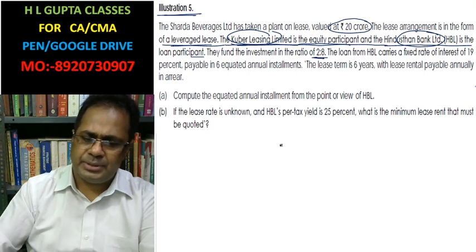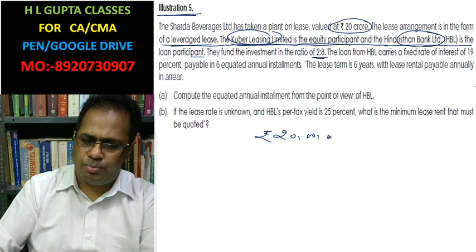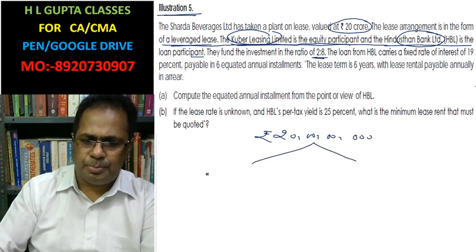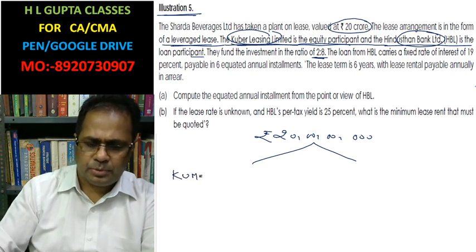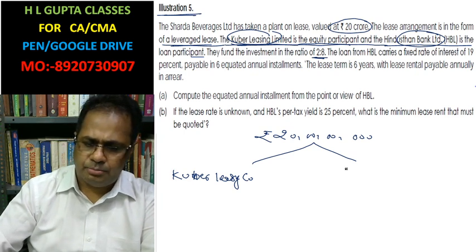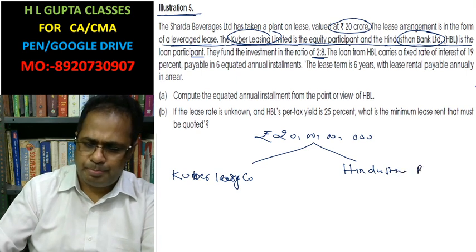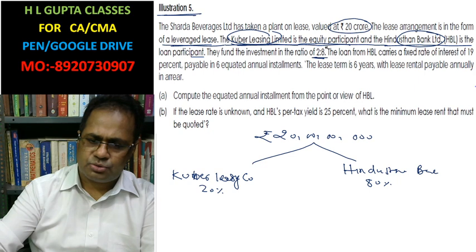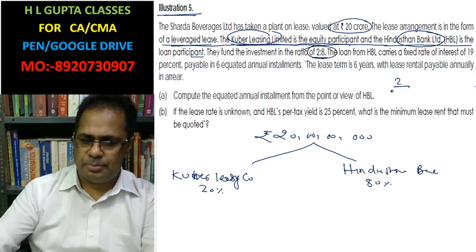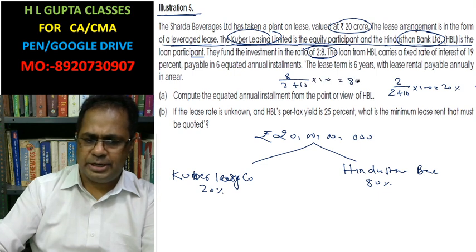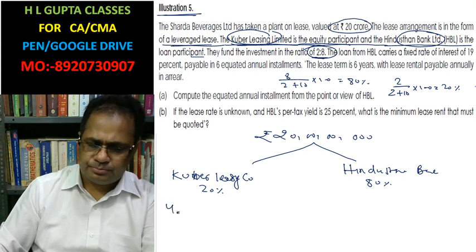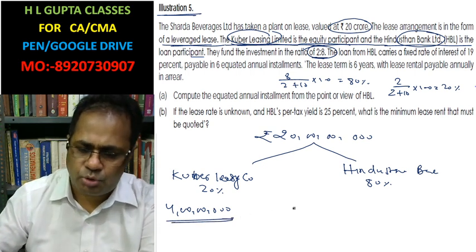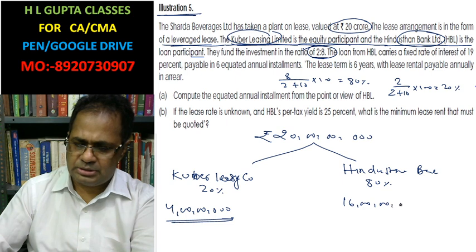The fund investment ratio is 2:8, meaning out of the total 20 crore required, there are two parties. Kubert Leasing contributes 20% and Hindustan Bank contributes 80%. Two divided by (2+8) into 100 equals 20%, and eight divided by (2+8) into 100 equals 80%. So Kubert Leasing has financed rupees 4 crore and Hindustan Bank has financed rupees 16 crore.